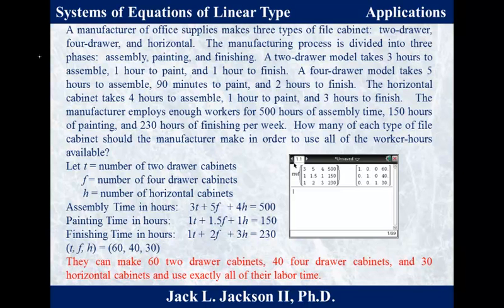The calculator gives T = 60, F = 40, and H = 30. So if the manufacturer makes exactly 60 two-drawer cabinets, 40 four-drawer cabinets, and 30 horizontal cabinets, they will exactly use up all available labor time with no workers sitting idle.